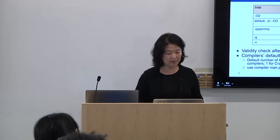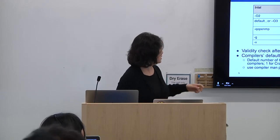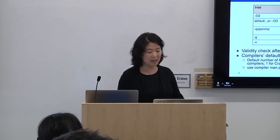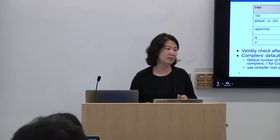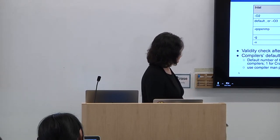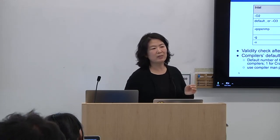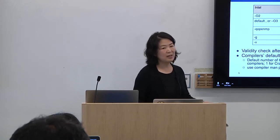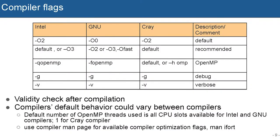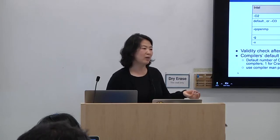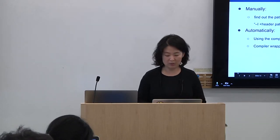One thing to remember is that the default behavior of compilers can be different. For example, the default number of OpenMP threads used by binaries differs between compilers. For GNU and Intel, if you just run a.out without specifying the number of OpenMP threads, by default it will use all the CPU slots it can find — so on a login node it will grab all available cores. The Cray compiler, on the other hand, defaults to using only one OpenMP thread.